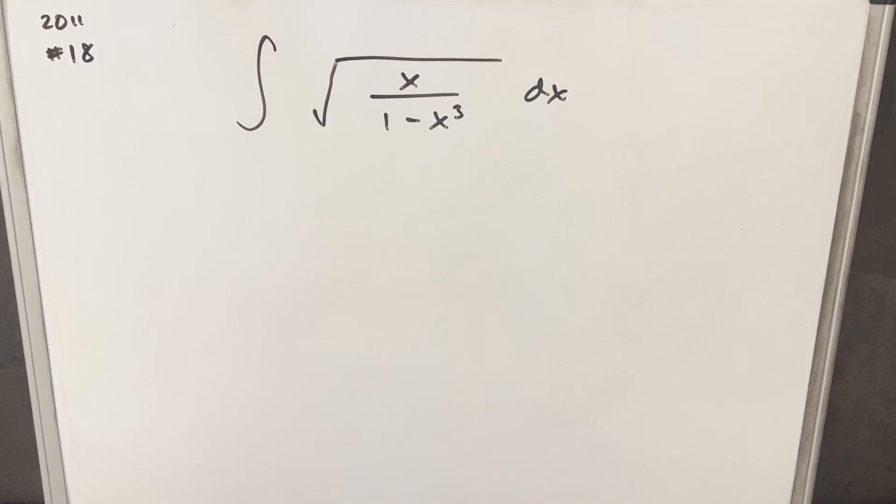When I was first looking at this, I was thinking it's kind of a problem. If we want to do any kind of u substitution, we need something outside of the square root. So it might help us to do some algebra before we do anything and get it into a nicer form.